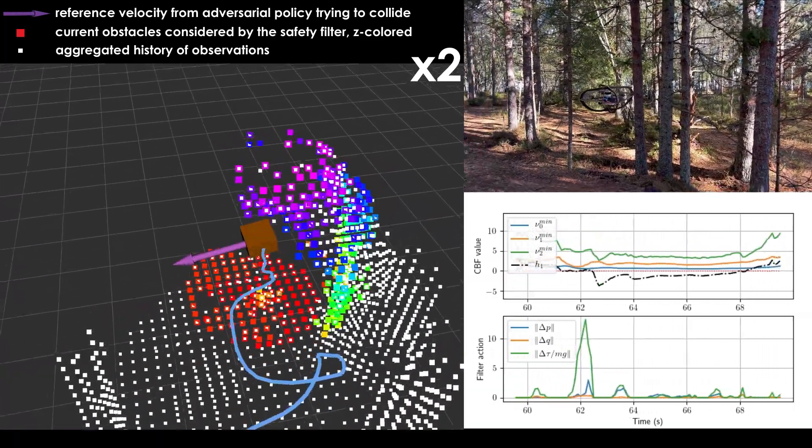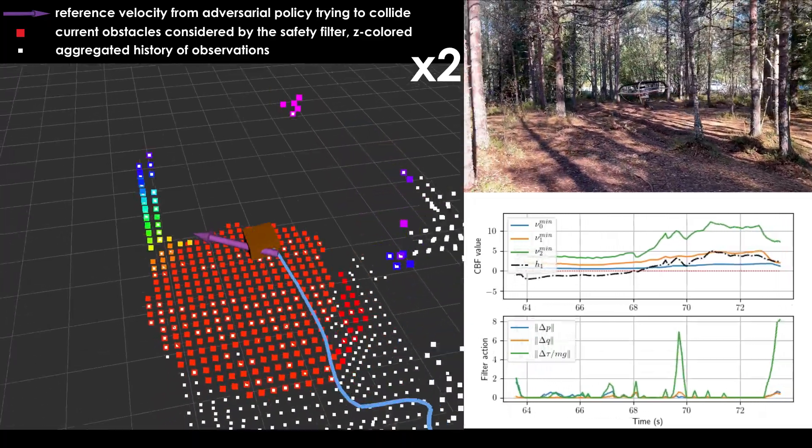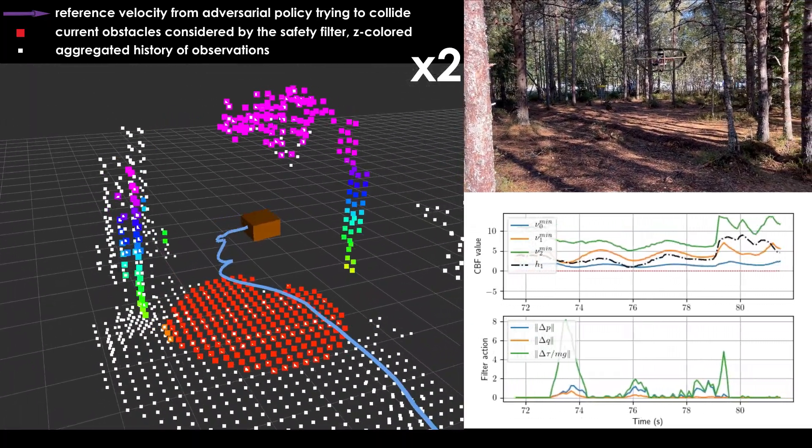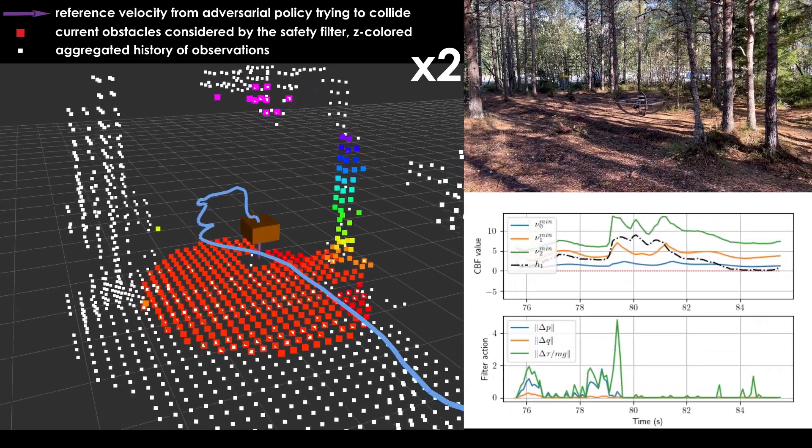In the final sequence of the video, the operator provides a downwards reference velocity, trying to collide with the ground. The safety filter successfully counteracts this, keeping the robot in air.